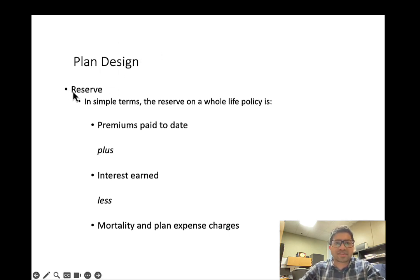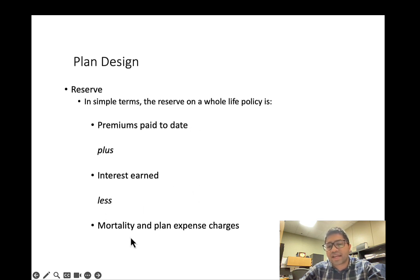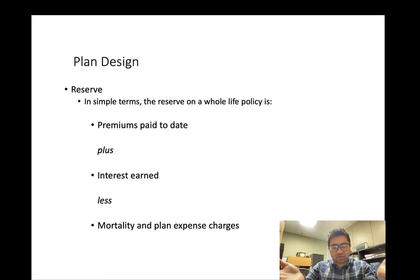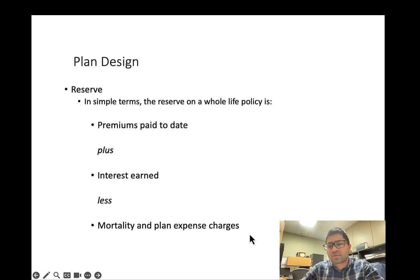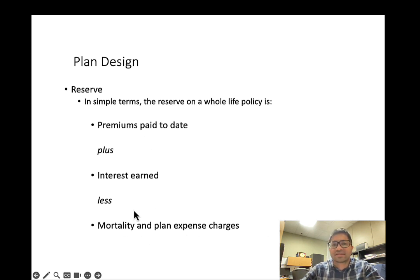A whole life policy has a reserve. The reserve is the total amount of premiums paid plus the interest earned on those premiums, minus the mortality and plan expenses the insurance company faces. Whatever premiums you pay into the whole life policy, if you are not making any claims, those premiums slowly start earning interest. The insurance company deducts the mortality and plan expense charges from the accumulating reserves.